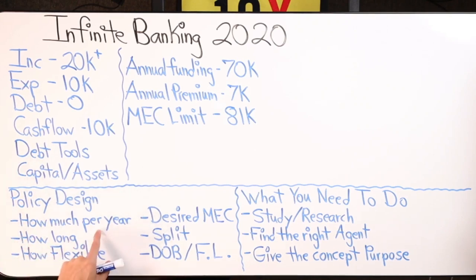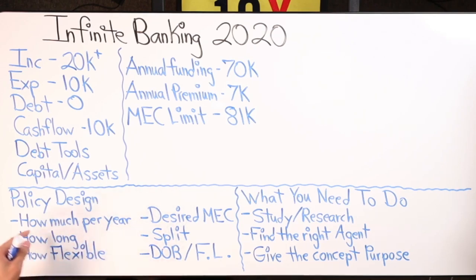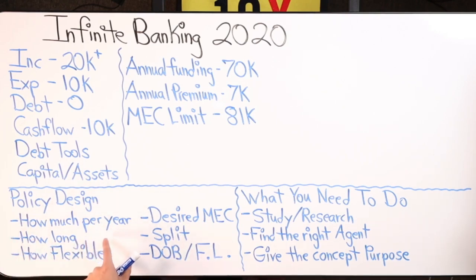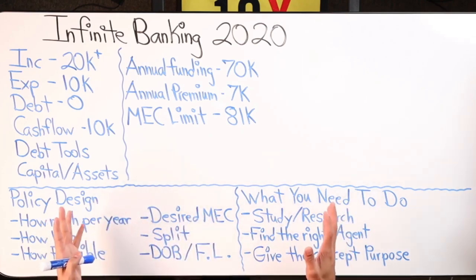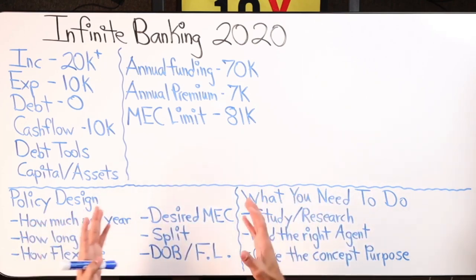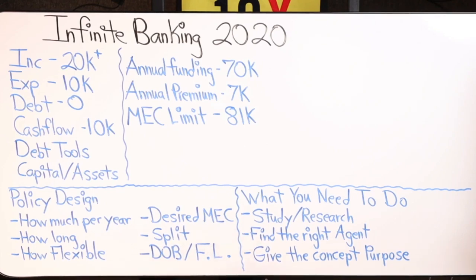So if you're trying to put in $20,000 a year into a policy, think about how long — because this way you can get to that ultimate dream number, the amount of money you want to save up over a period of time. How much? How long? The third question is: how flexible would you like your policy to be?